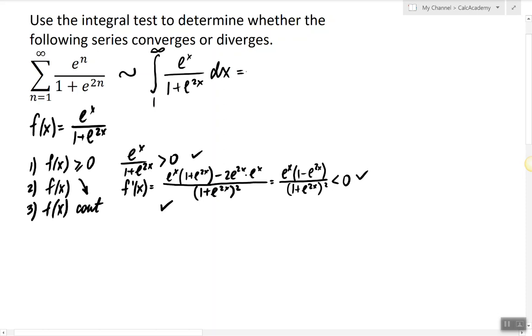Now to find this improper integral we're going to do a substitution. So e^x can be substituted, and then the integral can be computed. It's going to be arctangent of e^x from 1 to infinity.